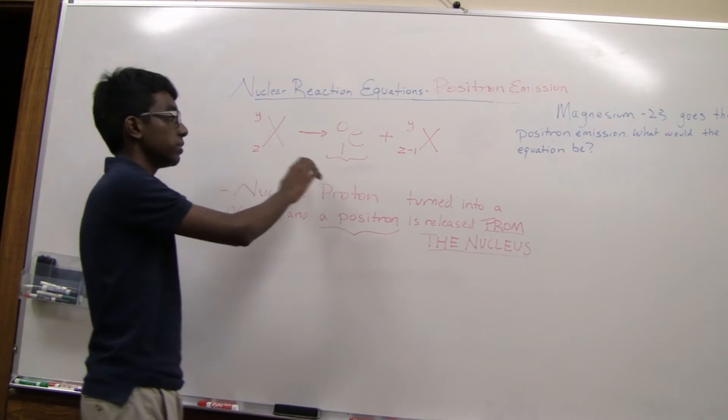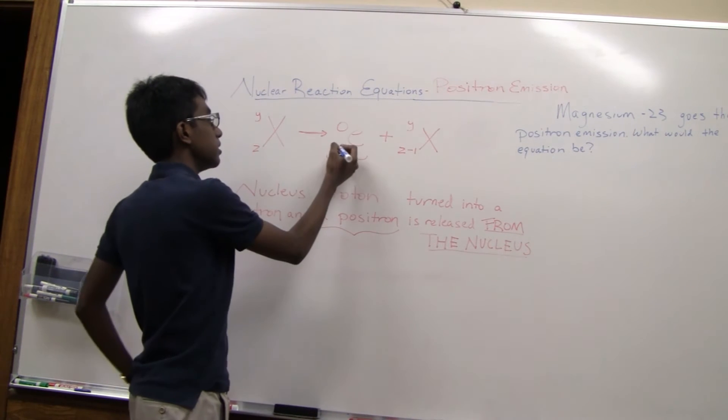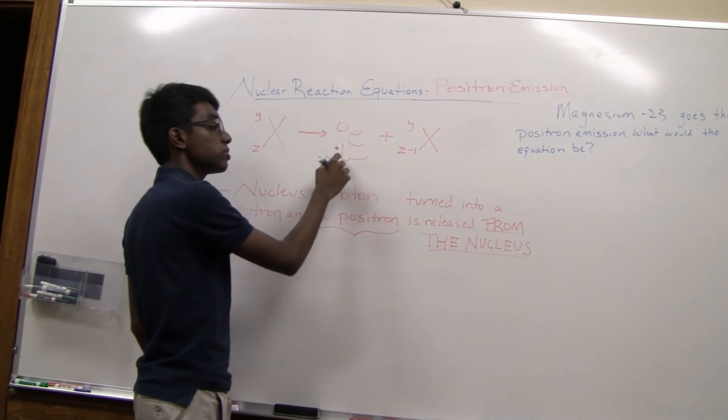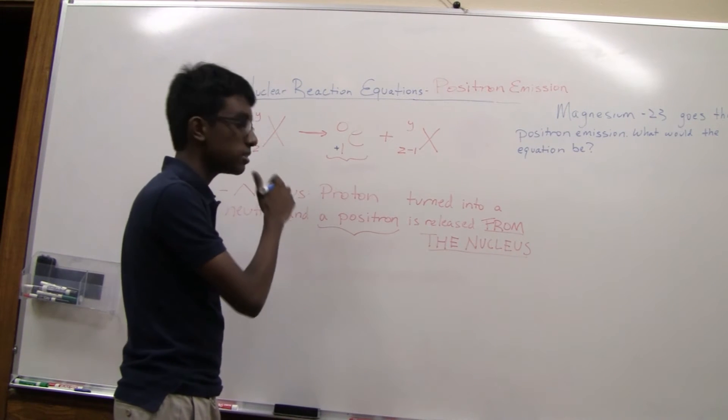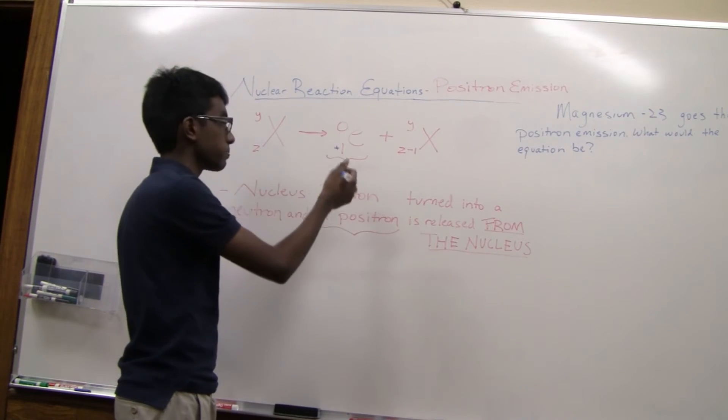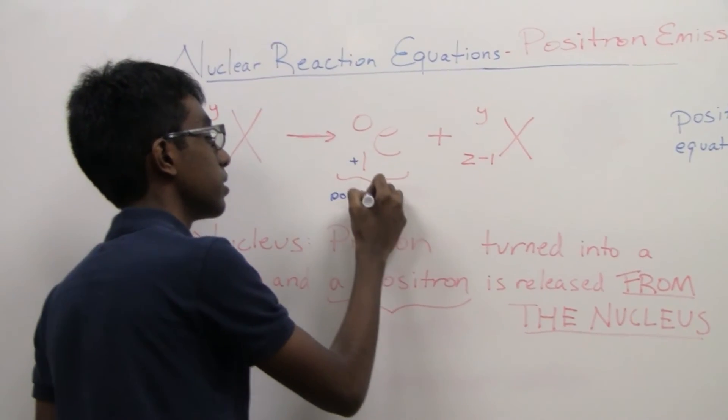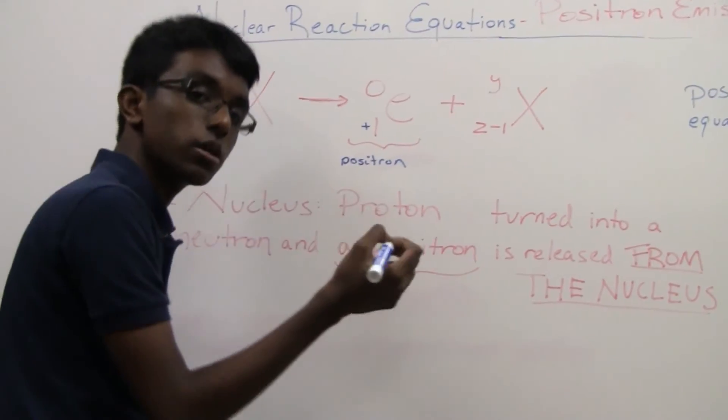and it's going to release an electron, but it actually has plus one as its atomic number. This is a positron, by the way, if you didn't know. It is a positively charged electron.